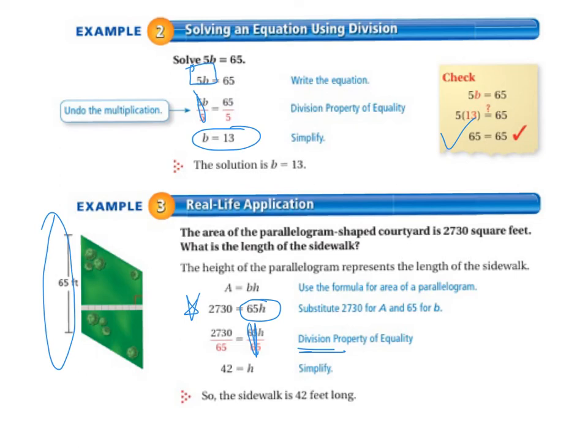So that goes away and leaves us with an H on the right. And then we need to solve the left-hand side by dividing 2,730 by 65. And when we do that, we get 42. So 42 equals H. So that means the sidewalk is 42 feet long.